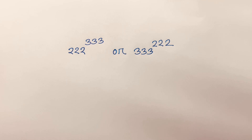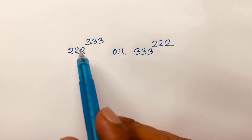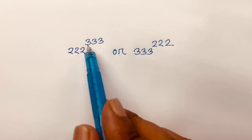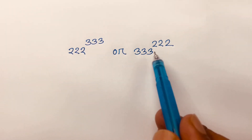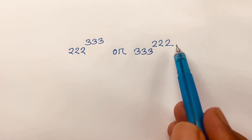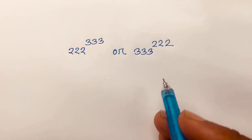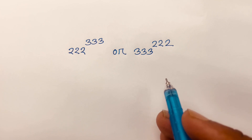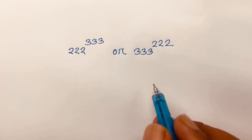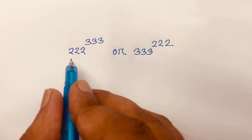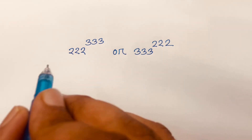Hello everyone. How to solve this exponential equation: here is 222 to the power 333, or 333 to the power 222? It is a Japanese Math Olympiad question.